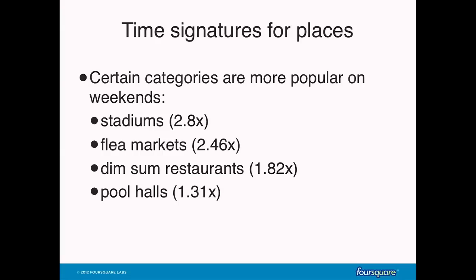This is the kind of data we want to use to build our recommendation engine — information about when different kinds of places are popular in the city. For instance, these kinds of places are more popular on weekends versus weekdays: stadiums, flea markets, dim sum restaurants, and pool halls.